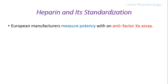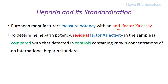European manufacturers measure the potency of heparin using the anti-factor Xa assay. To determine heparin potency, the residual factor Xa activity is calculated. This residual factor Xa activity in a sample is then compared with that detected in controls containing known concentrations of international heparin standards.